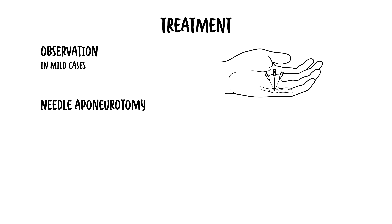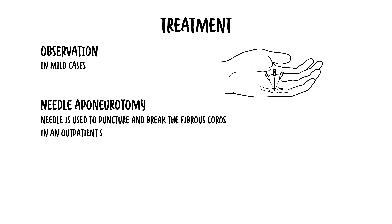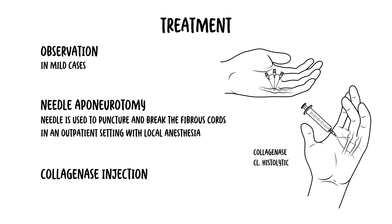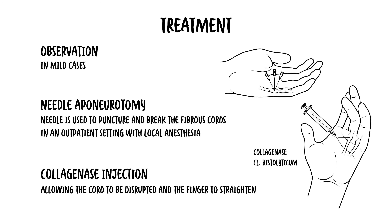Treatment of Dupuytren's contracture is aimed at improving hand function and may include observation, especially in mild cases where deformity has little impact. Needle aponeurotomy is a minimally invasive procedure where a needle is used to puncture and break the fibrous cords, allowing for improved finger extension, and can be performed in an outpatient setting with local anesthesia. Collagenase injection involves injecting collagenase clostridium histolyticum into the fibrous cord, causing enzymatic breakdown of the collagen and allowing the cord to be disrupted so the finger can straighten. This method may require manipulation of the finger by the healthcare provider the following day.